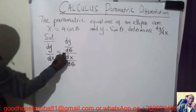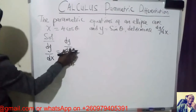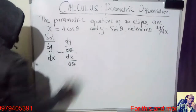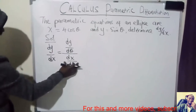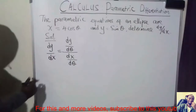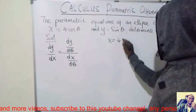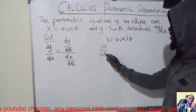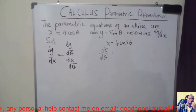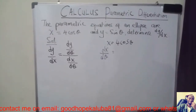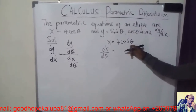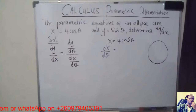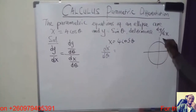What we need to do is differentiate y with respect to theta, then divide by the differentiation of x with respect to theta. I'll start with dx over d theta. So x is equal to 4 cos theta. In the previous videos, I discussed how you can memorize the derivative of cos theta, sin theta and so on — you make up a circle.